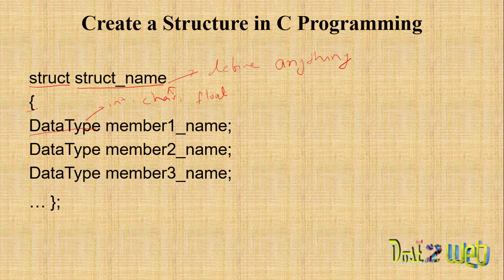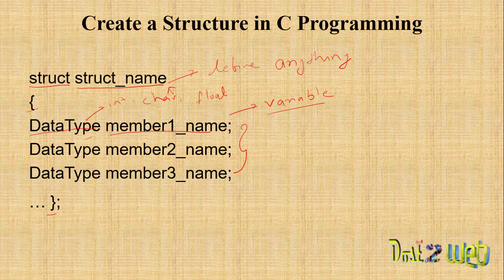You specify the data type and member name — the member name is essentially a variable. You can define any variable name, but remember the variable name and the structure name must not match. You can define as many variables as you need. At the end, you give a closing brace and semicolon to terminate the structure.